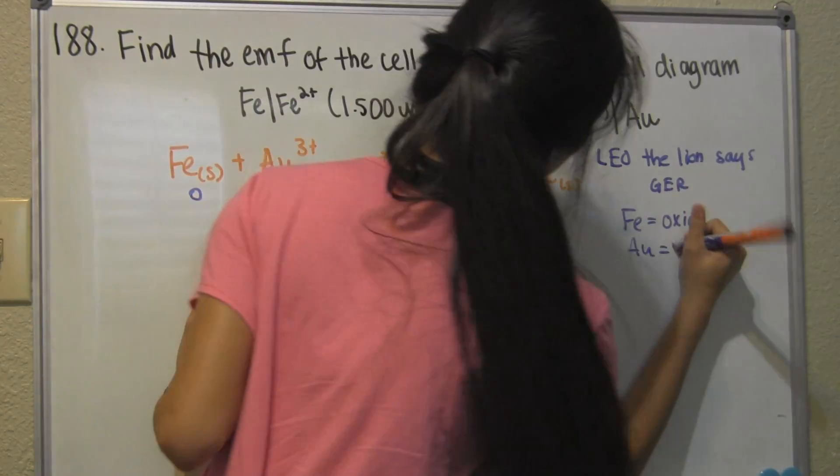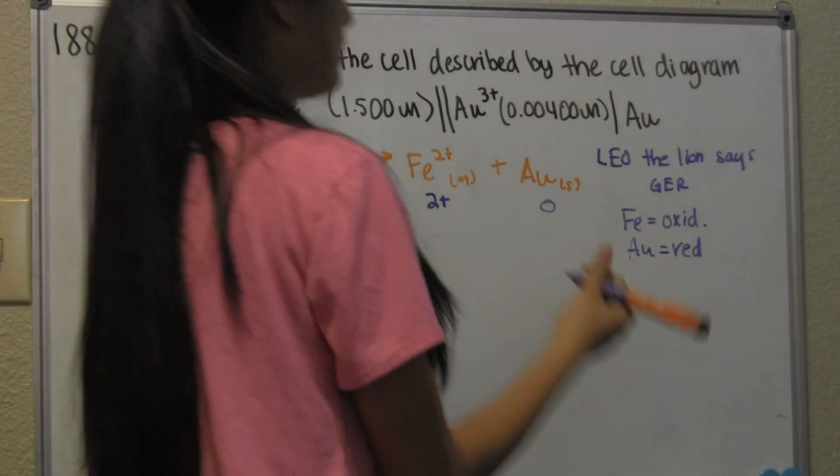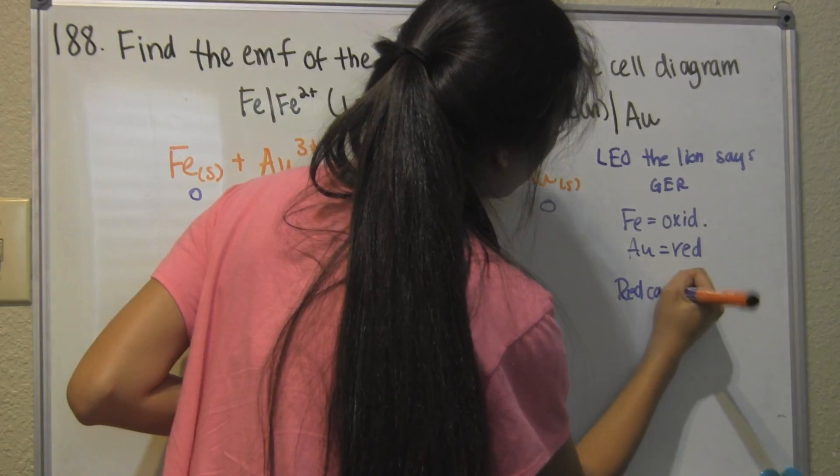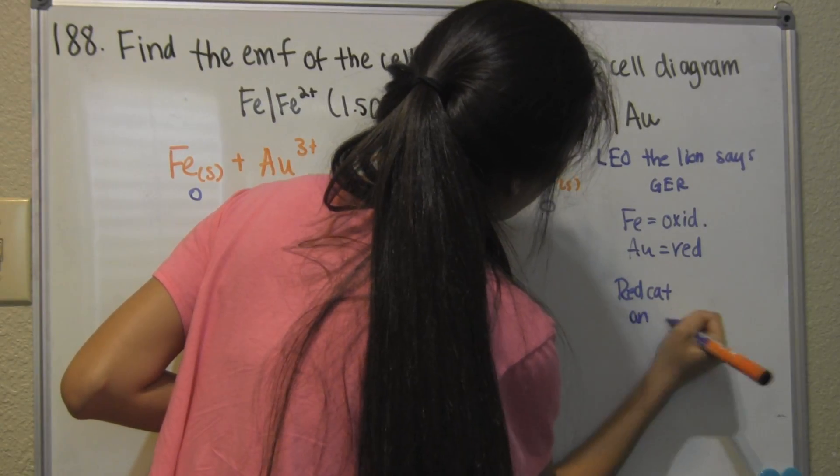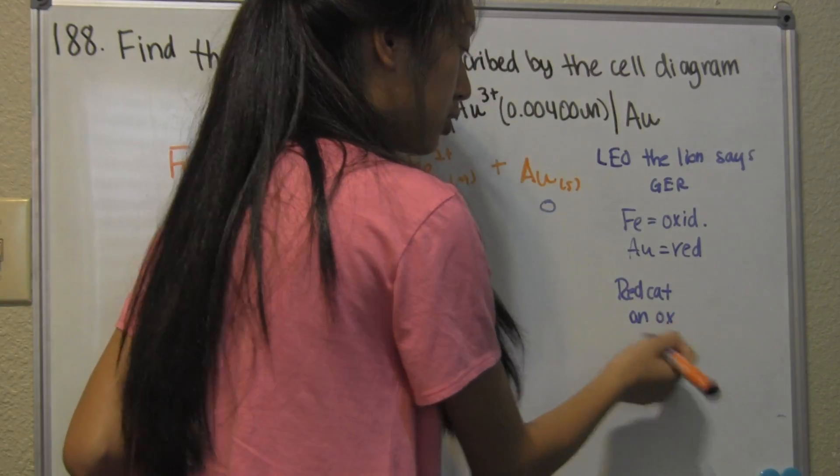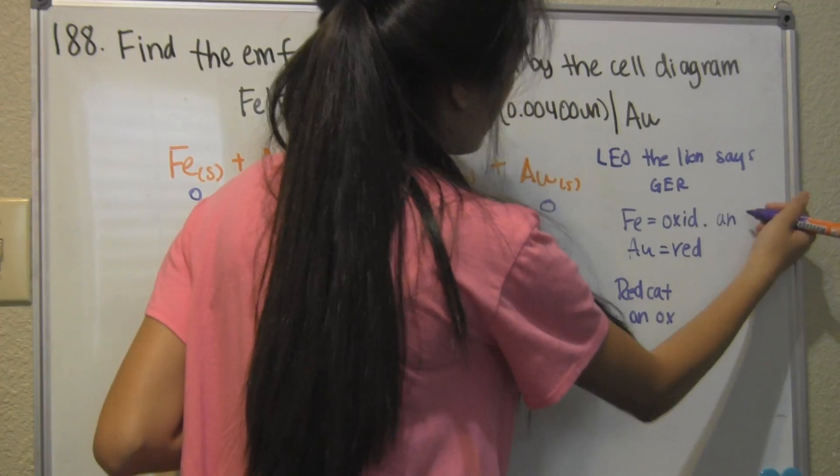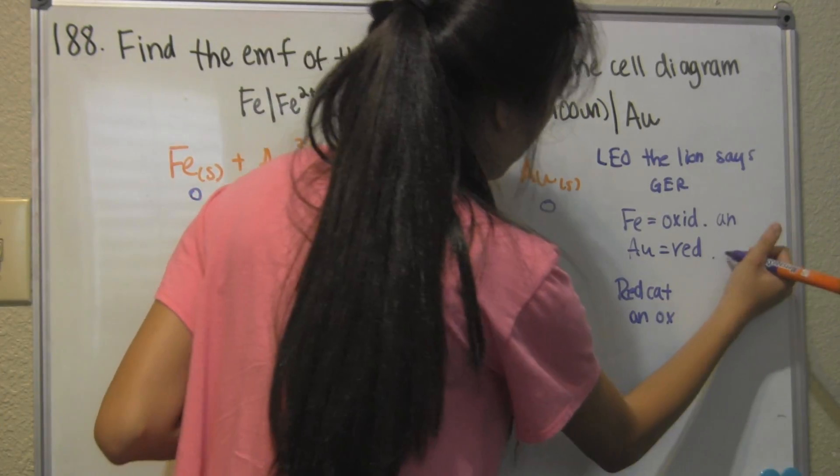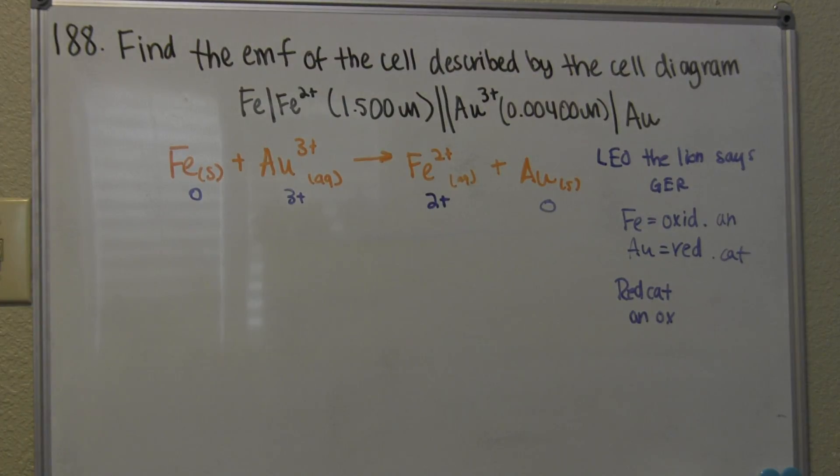If you remember, I posted another video about cell EMF. You should always think red cat and an ox. So the anode would be Fe, which is iron, and the cathode would be Au, which is gold.